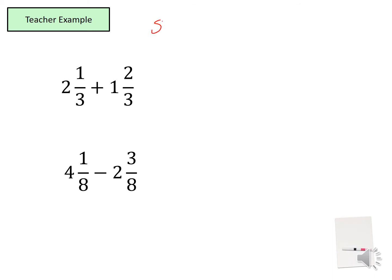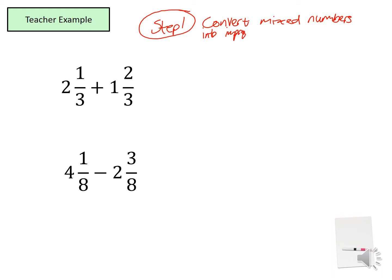Step one should be to convert mixed numbers into improper fractions. To convert two and one third, what I'm going to do is multiply the denominator by the integer and then add the numerator.